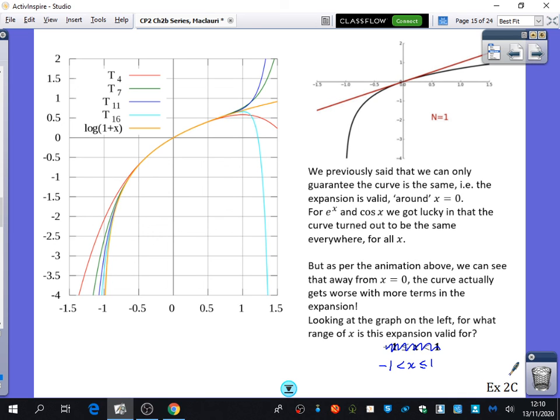So you're going to have a look at exercise 2c. 2c has a combination of different things. It's mostly going to be finding the Maclaurin expansions, and also doing some of the substitution and some of the estimates. We're just going to work on that for the last part of this lesson.